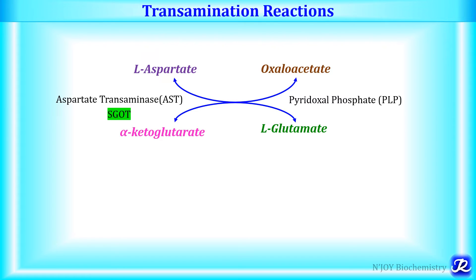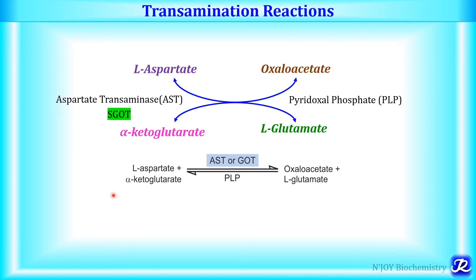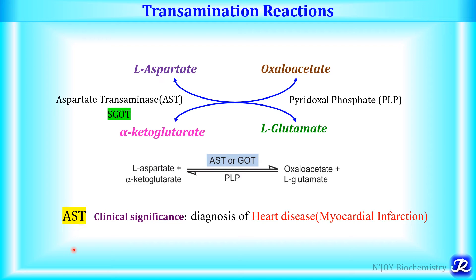The second transamination reaction involves the enzyme aspartate transaminase, called AST. This reaction involves transfer of amino group from L-aspartate to alpha-ketoglutarate to form glutamate and oxaloacetate. This reaction requires the coenzyme pyridoxal phosphate, as all transamination reactions do. AST is also called SGOT (serum glutamate oxaloacetate transaminase). This reaction can be written as: L-aspartate + alpha-ketoglutarate → oxaloacetate + glutamate. AST has clinical significance as it is used in the diagnosis of myocardial infarction; levels of AST are elevated in myocardial infarction.